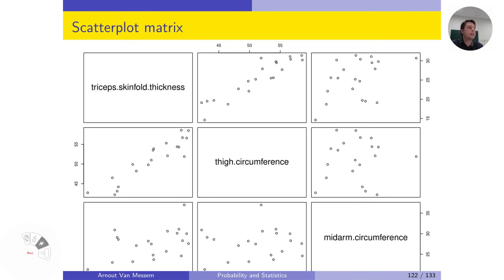So if we make a scatterplot matrix of the three predictors, what we see is that there here is a very strong, or there seems to be a very strong correlation between the skinfold, the triceps skinfold, and the thigh circumference.